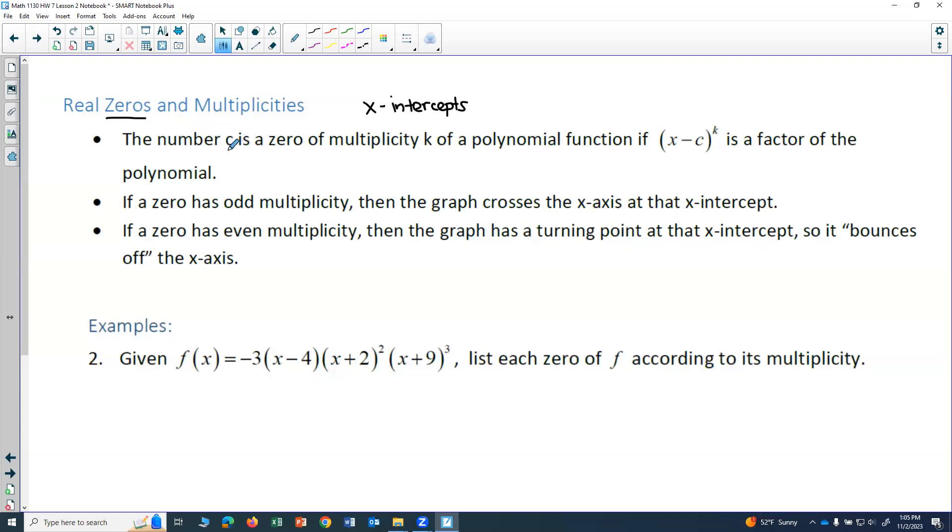The number c is a zero of multiplicity k. So now we're introducing this new concept of multiplicity of a polynomial function. If x minus c to the k is a factor of the polynomial.